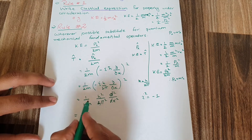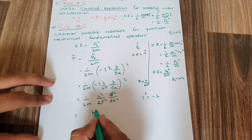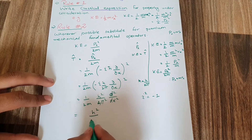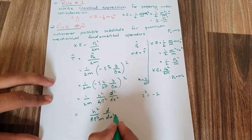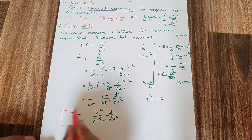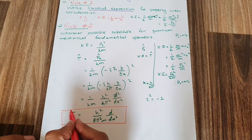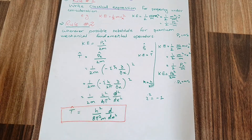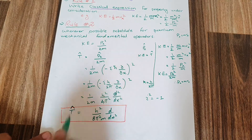Putting the square in, h squared divided by 2 squared becomes 4 pi squared, giving the equation equal to h squared divided by 8 pi squared m, times the second derivative d squared over dx squared. This is the equation for the kinetic energy operator T-cap.